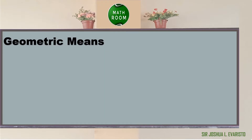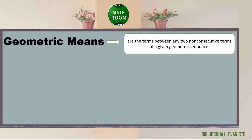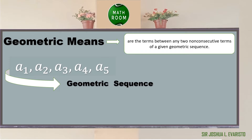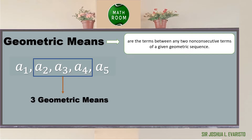Let's get started. Geometric means are the terms between any two non-consecutive terms of a given geometric sequence. Suppose we have a1, a2, a3, a4, and a5 as our geometric sequence. The geometric means are a2, a3, and a4 — so we have three geometric means.